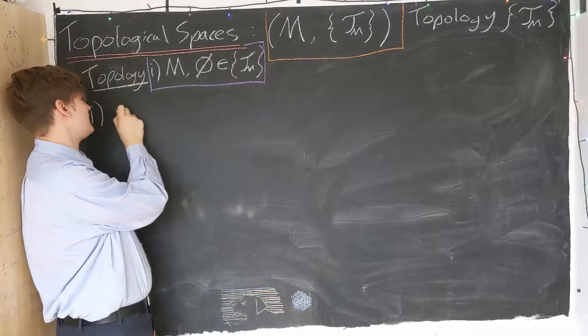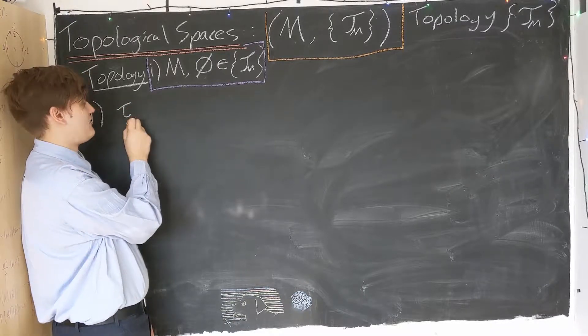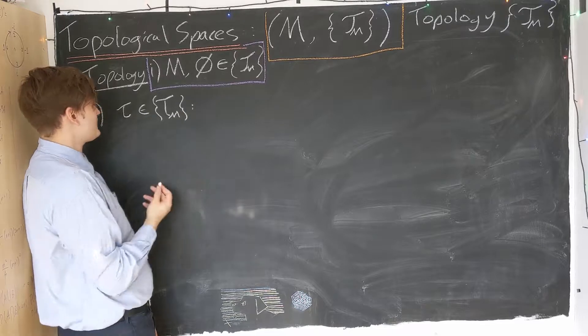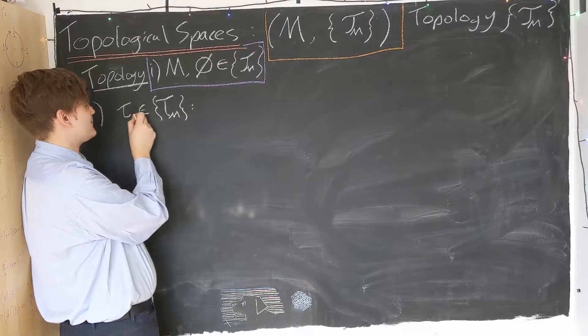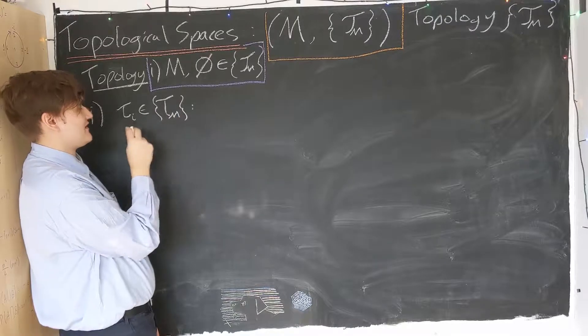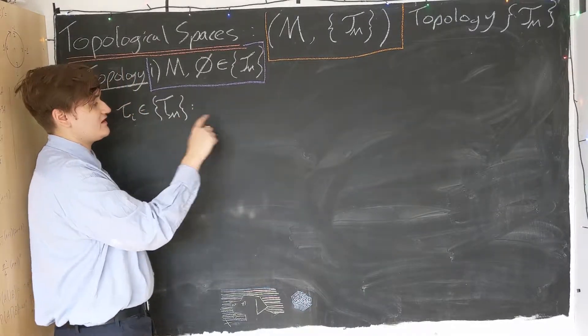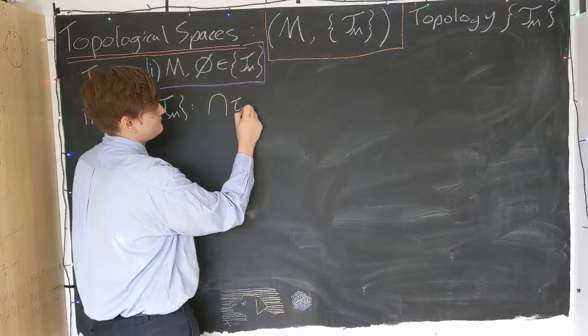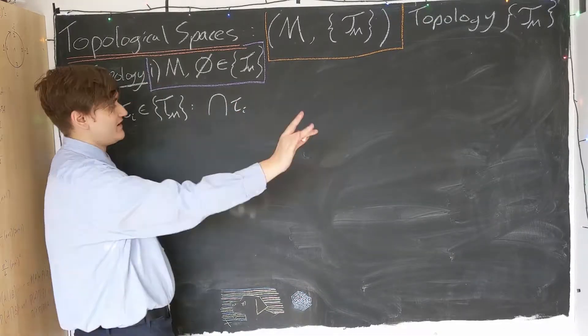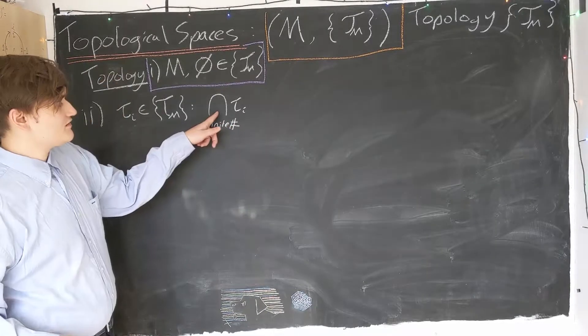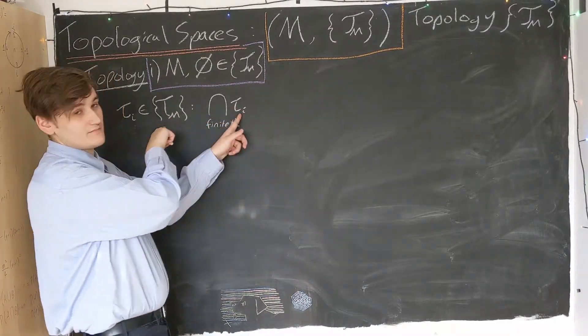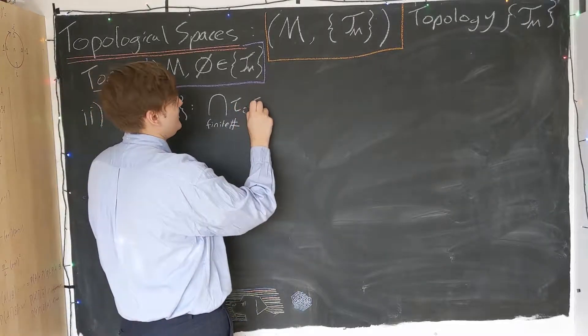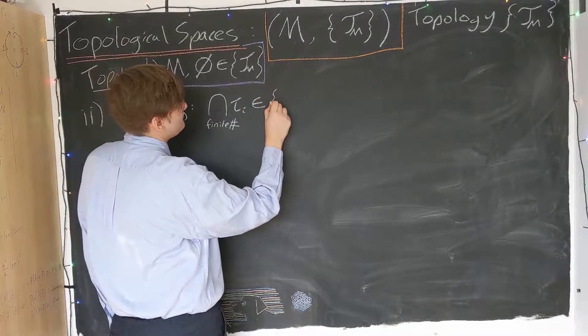Secondly, if we take any element that's in the topology, I'll call it tau. So tau is an element of the topology. If I now call these taus, I give each one of them a name with an index i. This just means there could be more than one tau. Now for any number of taus, we can then consider their intersection. And we can't just have as many taus as we would like; this has to be a finite number. So a finite number of intersections of topology elements. We know the topology elements are just sets; we can take their intersection. This intersection must also lie in the topology.